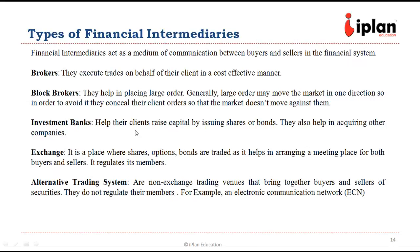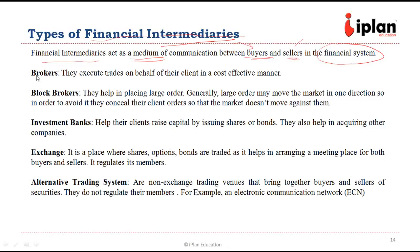The types of financial intermediaries. Financial intermediaries are the medium of communication between buyers and sellers in the financial system. They basically connect the people who can provide capital and the people who can use the capital provided. In other words, buyers and sellers intermediaries are the medium of communication between the two.